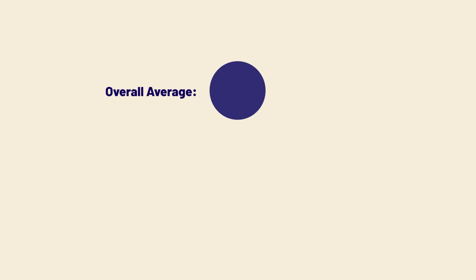What if there's more going on hidden underneath this overall average? What if different groups of farmers experienced this project differently? Let's break it out from an equity perspective. Let's say that our overall average contains three ethnic groups of farmers with historically different levels of income.